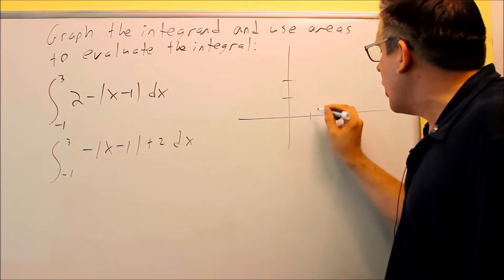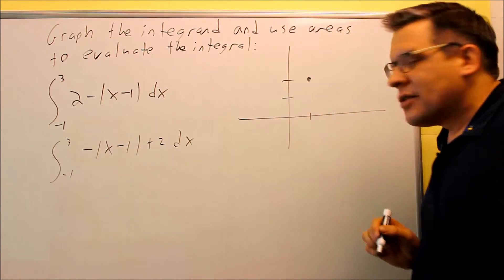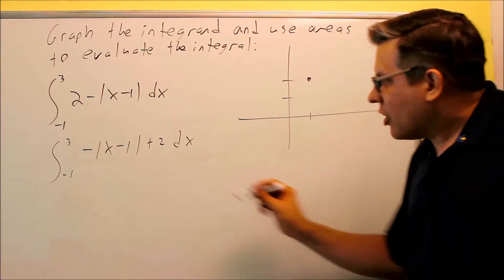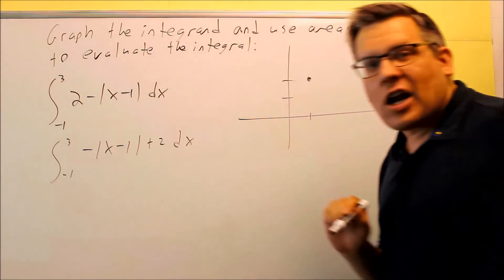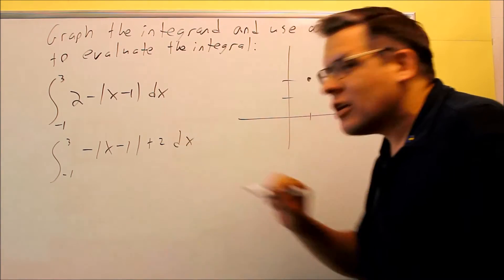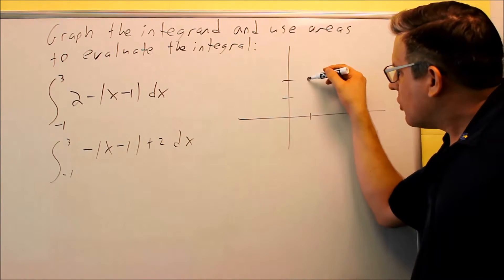So from here, we move over 1, up 2 units. This is going to be the starting point of the absolute value. So again, you always do opposite sign of the inside, same sign as the outside when you start this. This gives you the vertex.